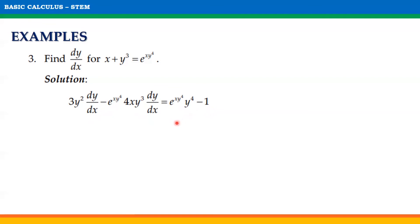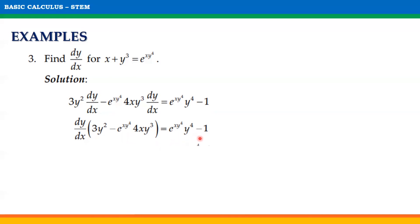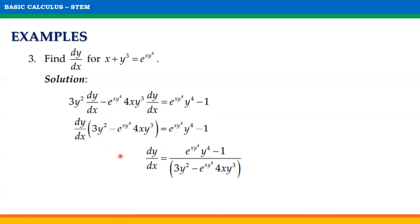Next, factor out dy/dx from those two terms. Since we are solving for dy/dx, divide both sides of the equation by this expression. Thus, dy/dx is equal to e^(xy⁴) · y⁴ minus 1, all over 3y² minus e^(xy⁴) · 4xy³.